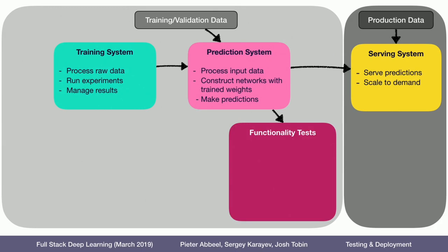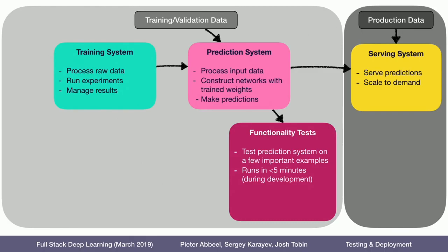To test the prediction system, I make a conceptual difference between what I call functionality tests. The role of functionality tests is to test the prediction system on just a few important examples — stuff that you really want to get right, or that is crucial for business reasons. It should run pretty quickly, so you can run it as you develop to know you're not badly breaking things. It should catch code regressions — like a typo that makes stuff stop working entirely.